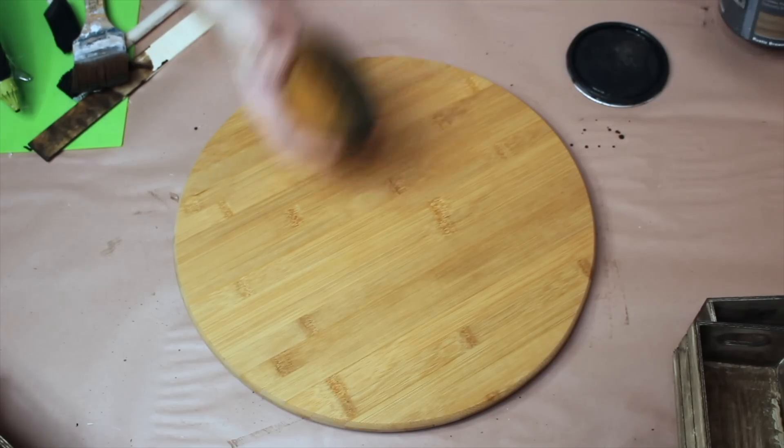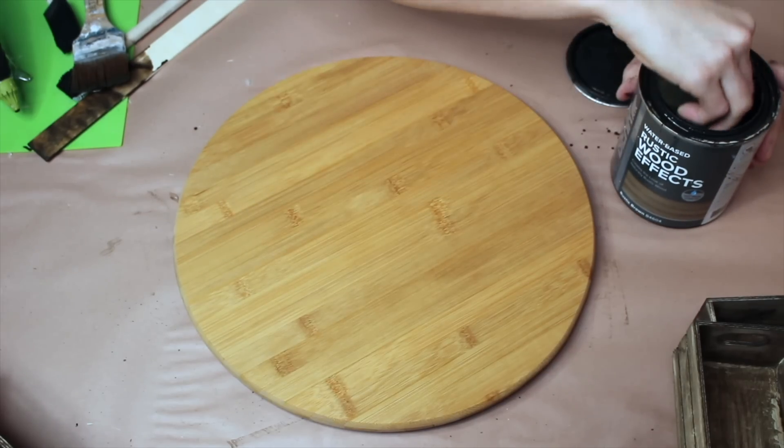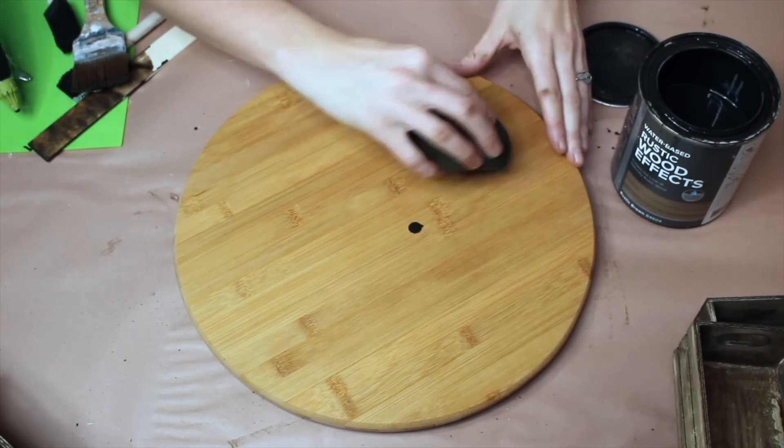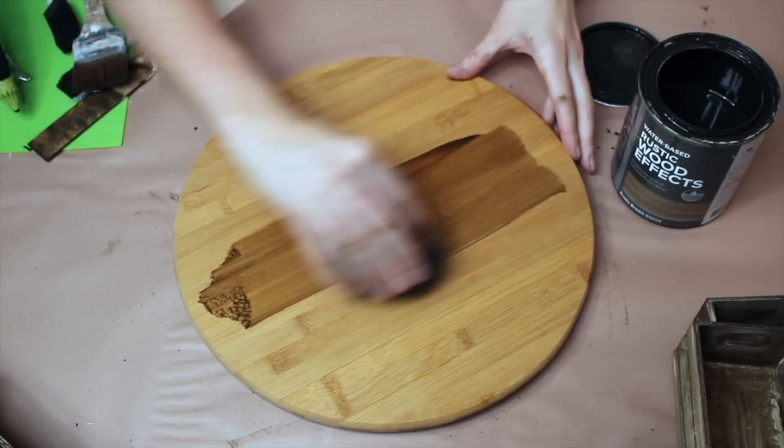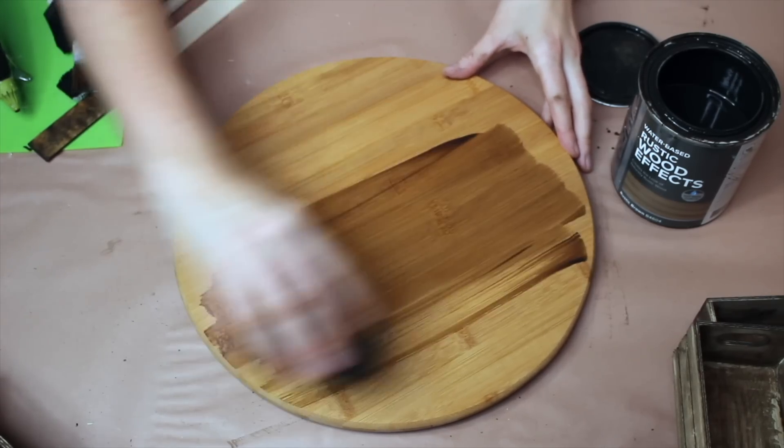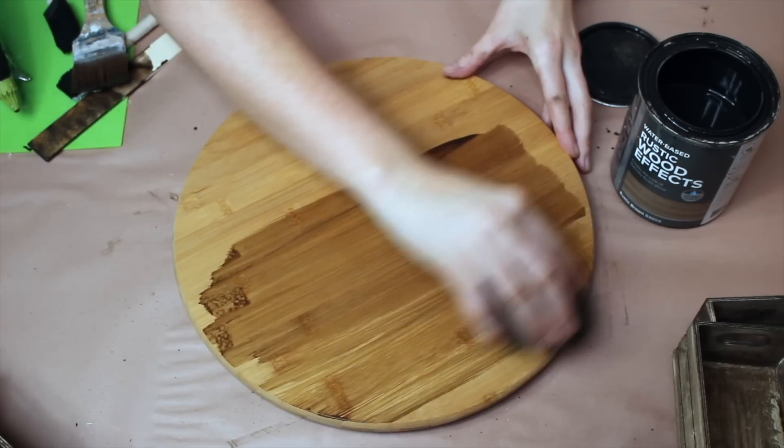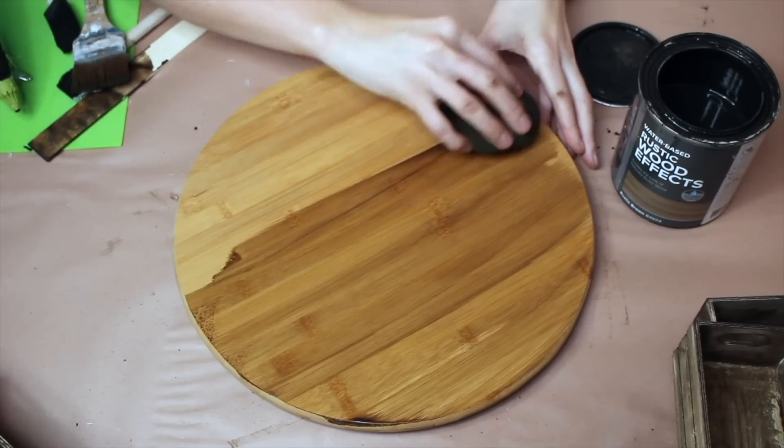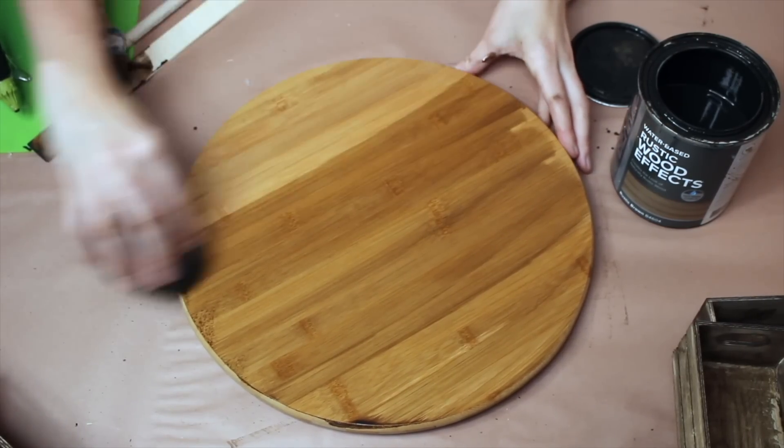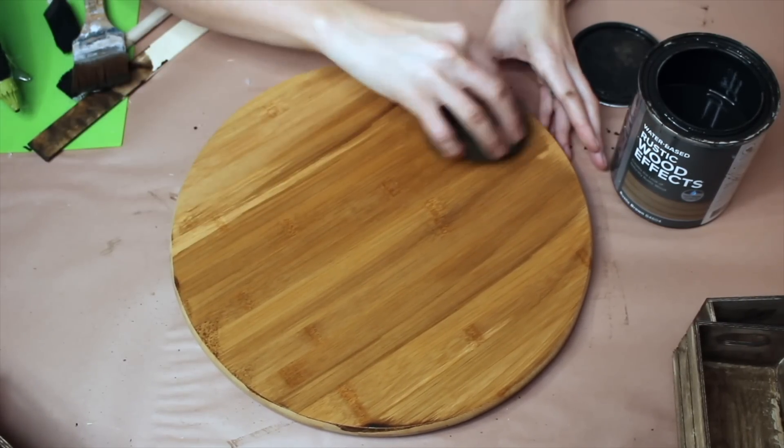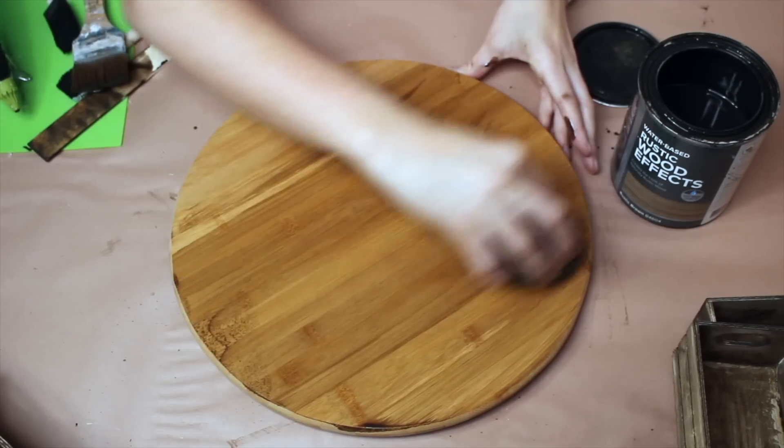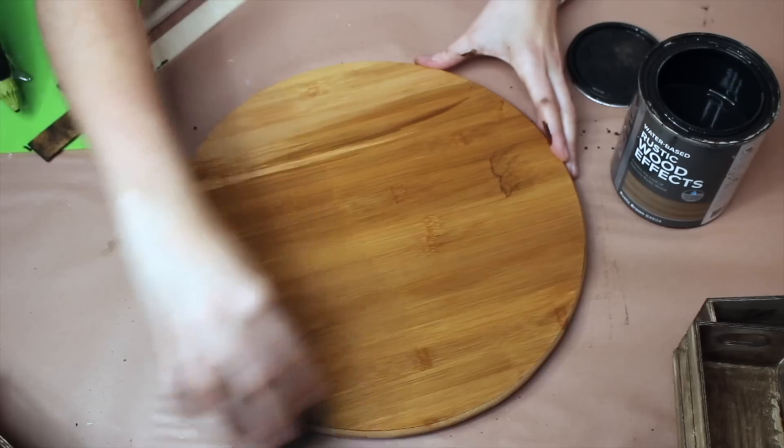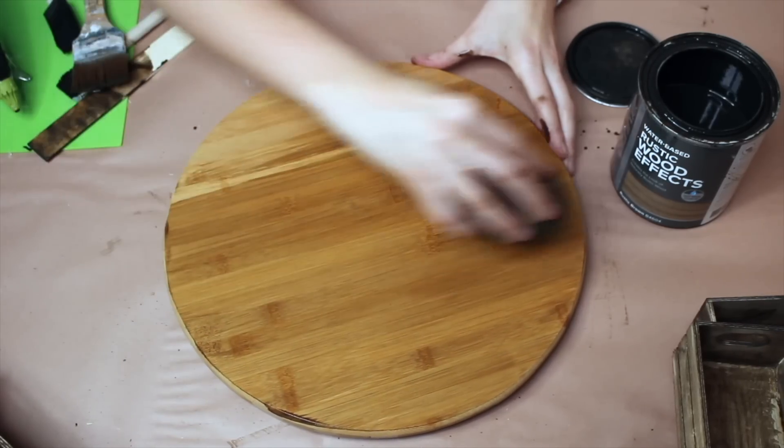So we're going to work on this bamboo lazy Susan. It's 14 inches in diameter. I got it on Amazon. It was relatively inexpensive and we are going to stain this as well. So I'm going to be using my sponge for this. I'm going to use the same stain, just going with the grain. I may do a couple coats on this. I do want it to be a little darker than it started.